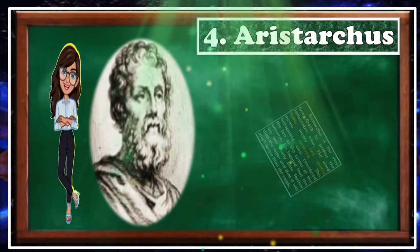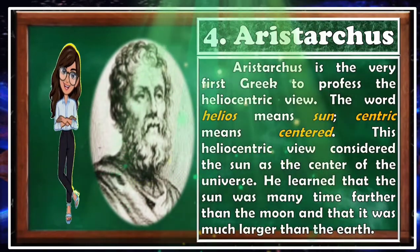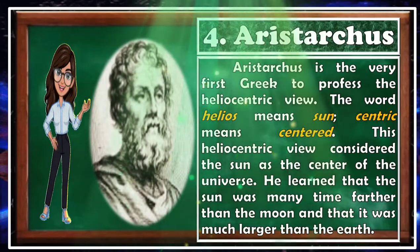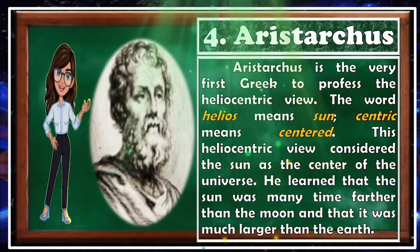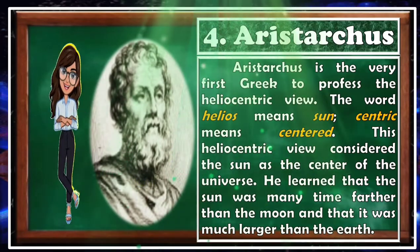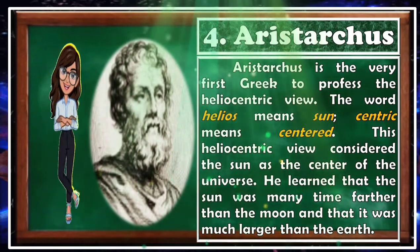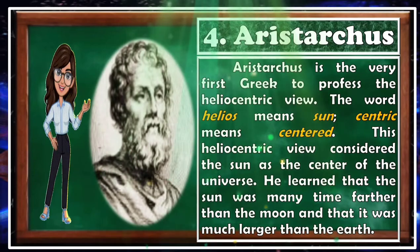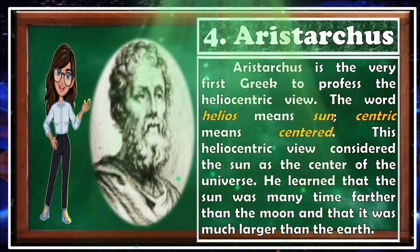Our next Greek astronomer is Aristarchus. Aristarchus is the very first Greek to profess the heliocentric view. The word 'helios' means sun and 'centric' means centered. This heliocentric view considered the sun as the center of the universe. He learned that the sun was many times farther than the moon and that it was much larger than the Earth.